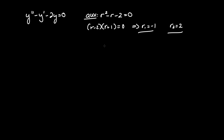I tend to keep the smallest one as r1 and the larger one as r2. We can see that r1 does not equal r2 — they are two distinct solutions. That yields an expression for y homogeneous equal to c1 e to the r1·t plus c2 e to the r2·t.